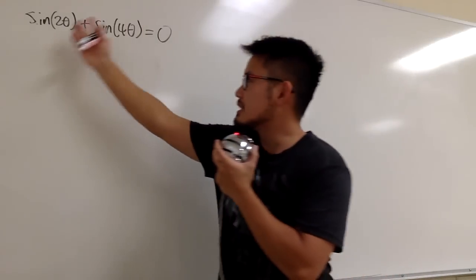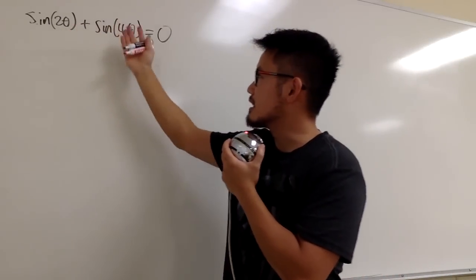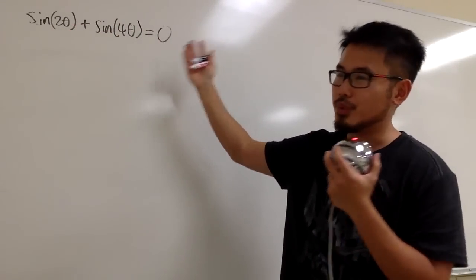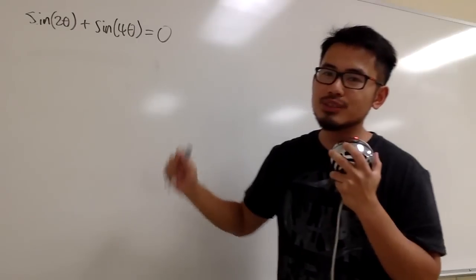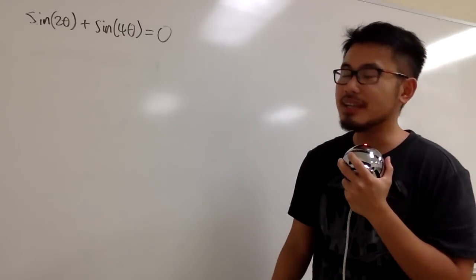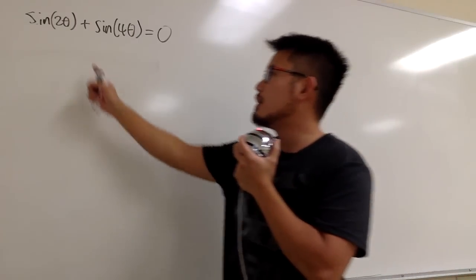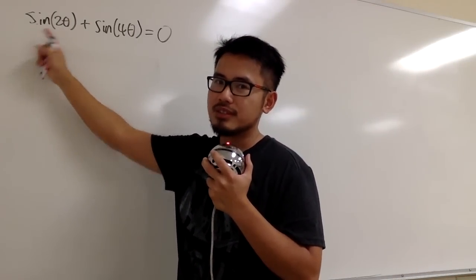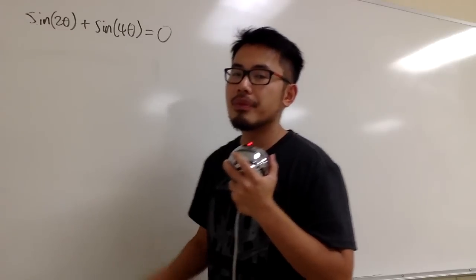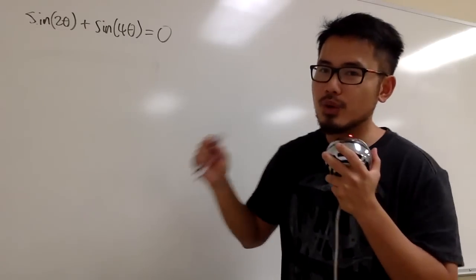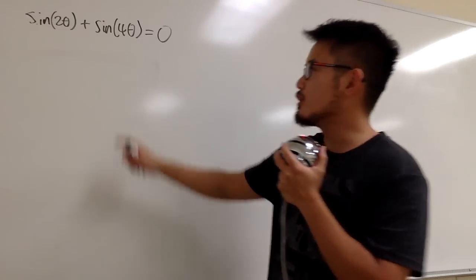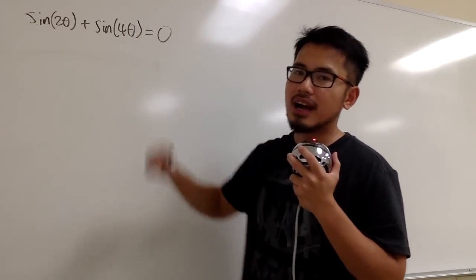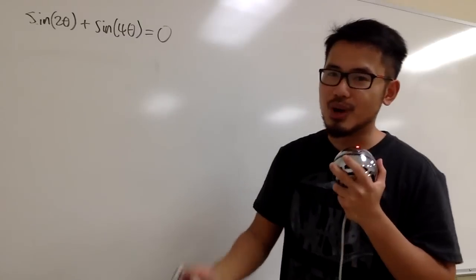We are going to solve this equation: sine of 2 theta plus sine of 4 theta is equal to 0. The angles are different, so we must do something about it first. However, we are not going to use the double angle formula for the sine of 2 theta. In fact, we are going to use the double angle formula with the sine of 4 theta.